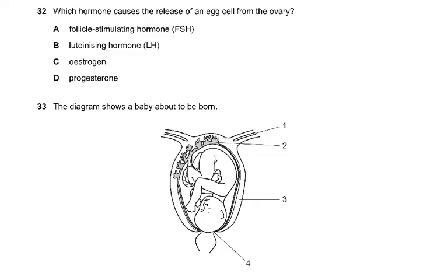Question 32: Which hormone causes the release of an egg cell from the ovary? Follicle-stimulating hormone causes production of the ovum/follicle. Oestrogen repairs the uterus lining. Progesterone thickens the uterus lining. The answer is B — luteinising hormone, which causes the Graafian follicle to come to the surface, form a blister, burst, and release the ovum.